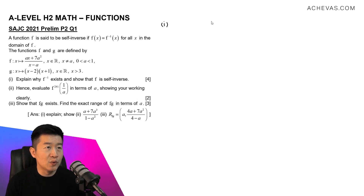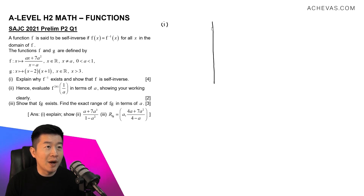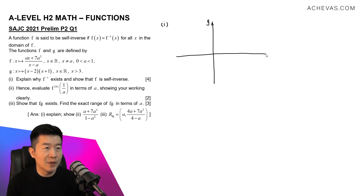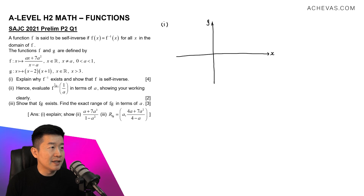Let me draw the axes. So this is going to be the y-axis and the x-axis. It has a vertical asymptote, and since a is between 0 and 1, the vertical asymptote is x equals a, so we will have this on the positive side.